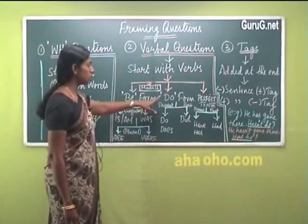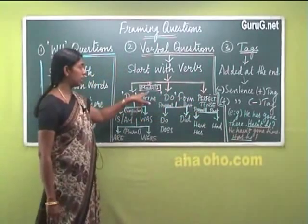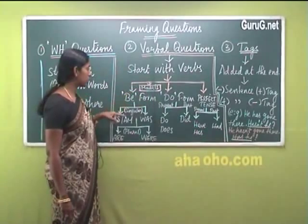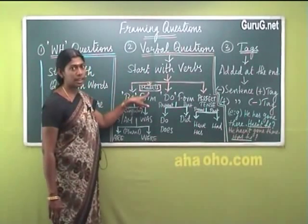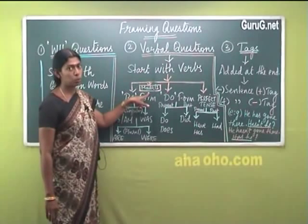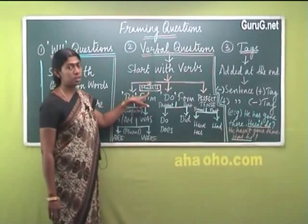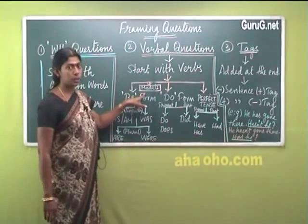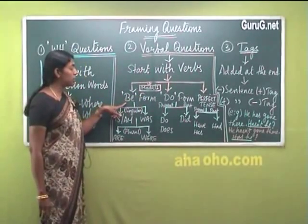The three classifications of verbal questions are the be form of verbs, the do form of verbs, and perfect tense verbs. In addition to that, with the help of modals we can also frame questions. The list of modal verbs includes can, could, may, might, shall, should, will, would, ought to, must, need, and dare. However, we cannot use all modal verbs in framing questions except for a few.